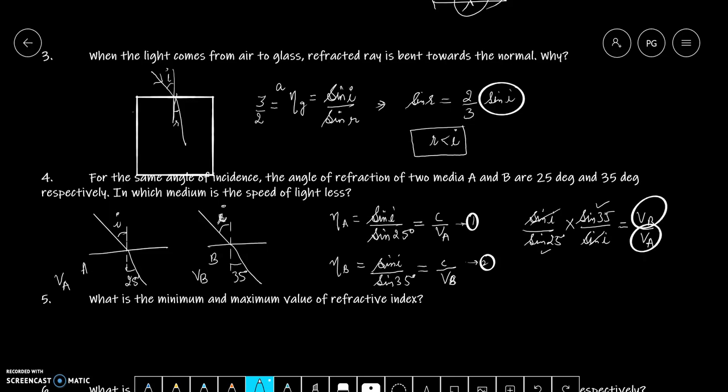Tabhi humain left side pe greater than one number aega. Or I can write VA is less than VB. Iska matlab A medium may speed of light kam hoogi, tabhi humain par zyadha bending ho raha hai. Or B medium may speed of light zyadha hoogi, tabhi humain par bending kam hai.